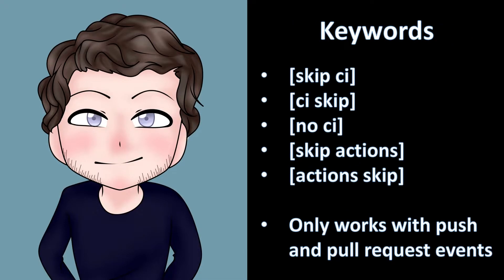You can skip workflow runs triggered by the push and pull request events by including a command in your commit message. Any of the following commands will work when included in the commit message of a push or the head commit of a pull request, and yes, the square brackets are needed at either end of the command. Skip instructions only apply to the push and pull request events and only apply to the workflow runs that would be triggered by the commit that contains the skip instructions.